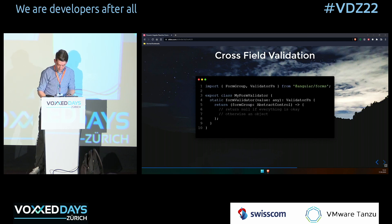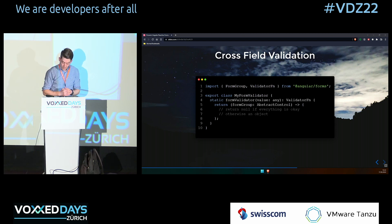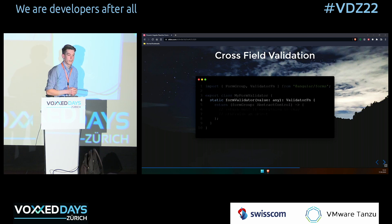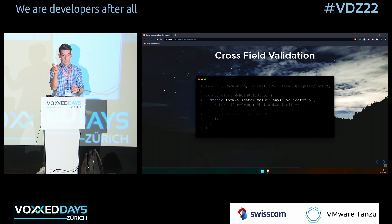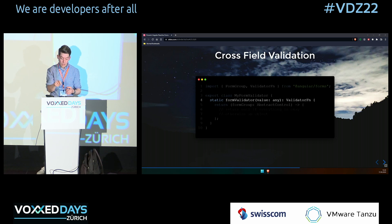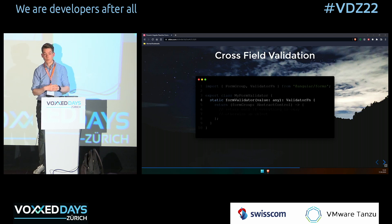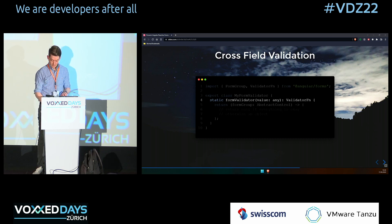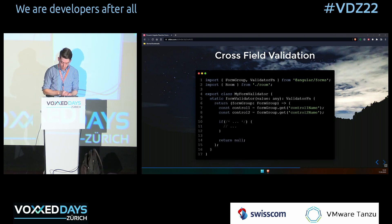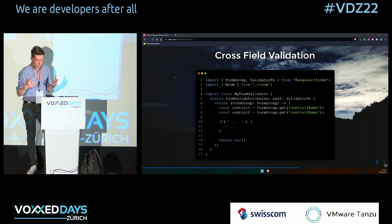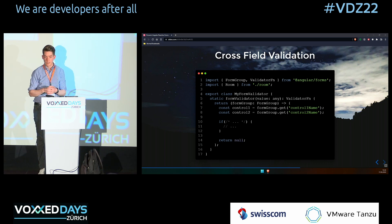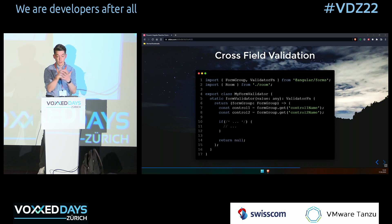A cross-field validator looks like this: a class myFormValidator with a static method returning a validator function. I like this pattern because I can pass values to it — the function accepts a FormGroup as AbstractControl, and inside I can get control one and control two, check their values combined, and return null if valid or an error object if not. For example, a dropdown to select a room and an age input — you can pass the age threshold as a parameter and check if entry into that room is valid. This makes validators very reusable.